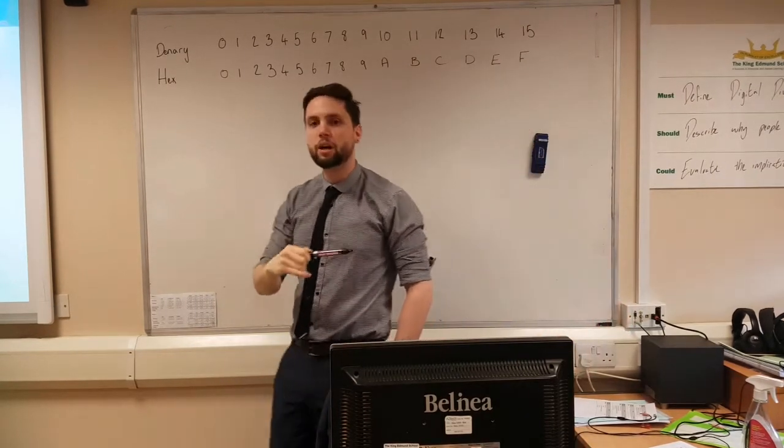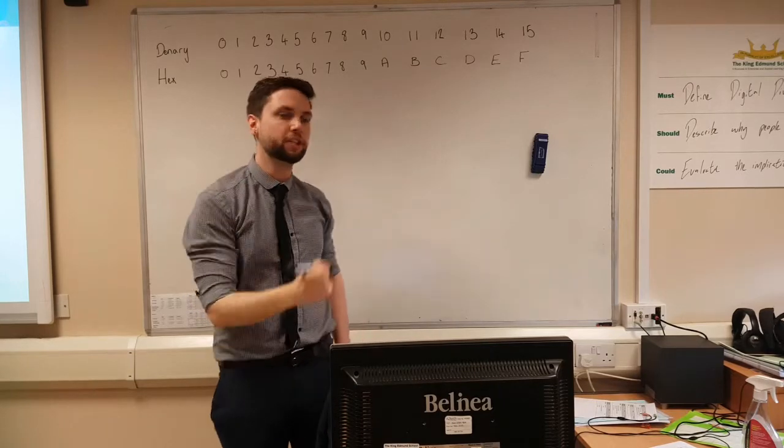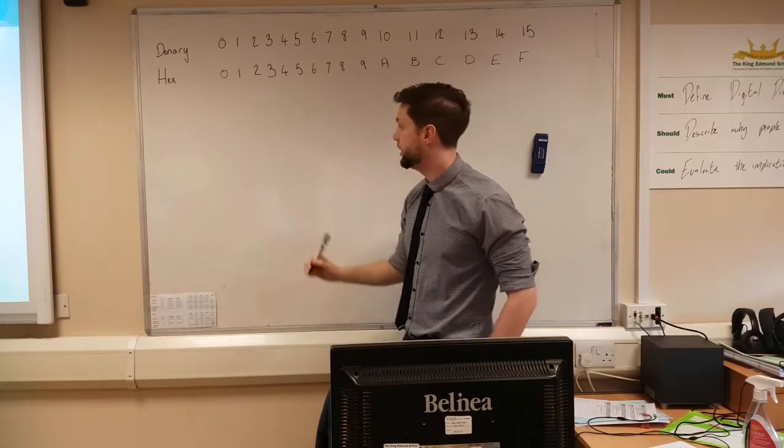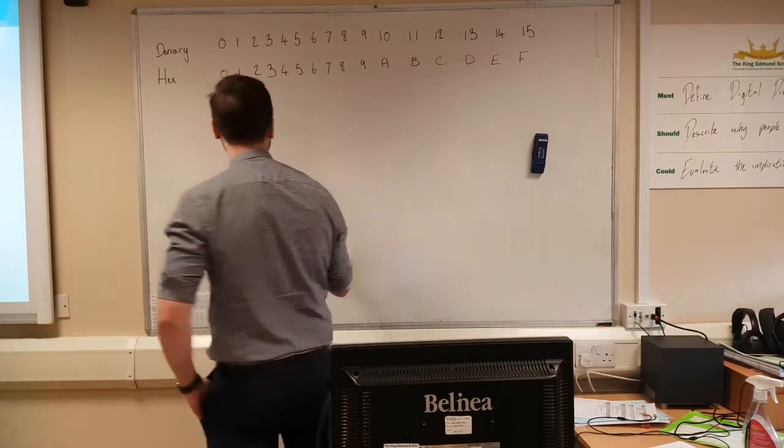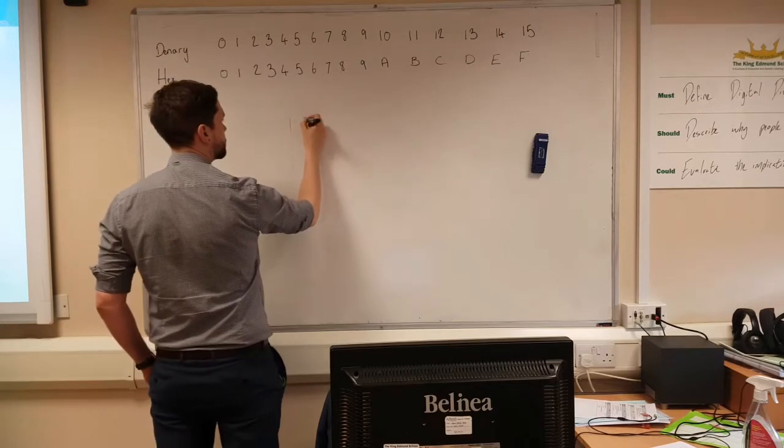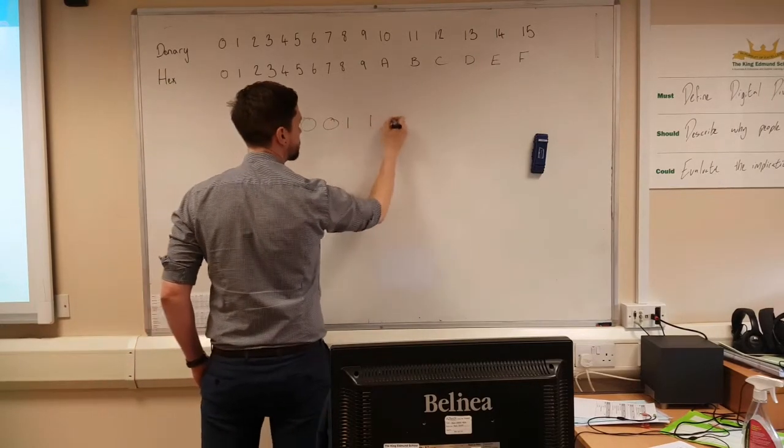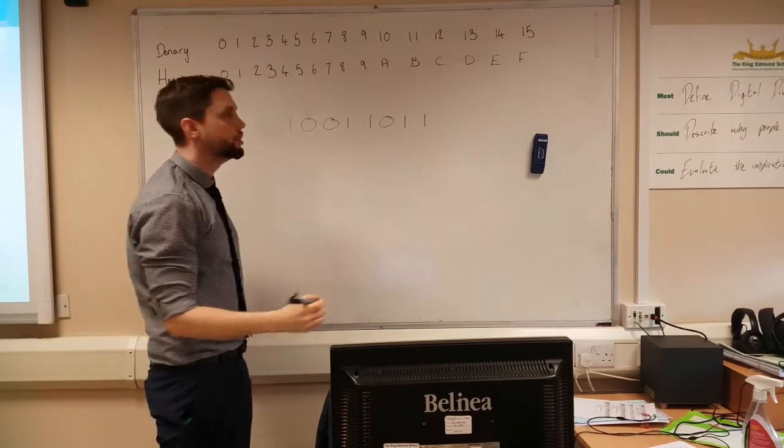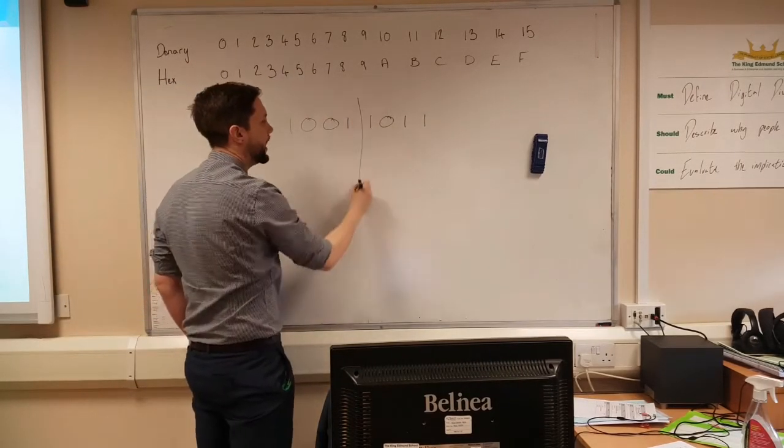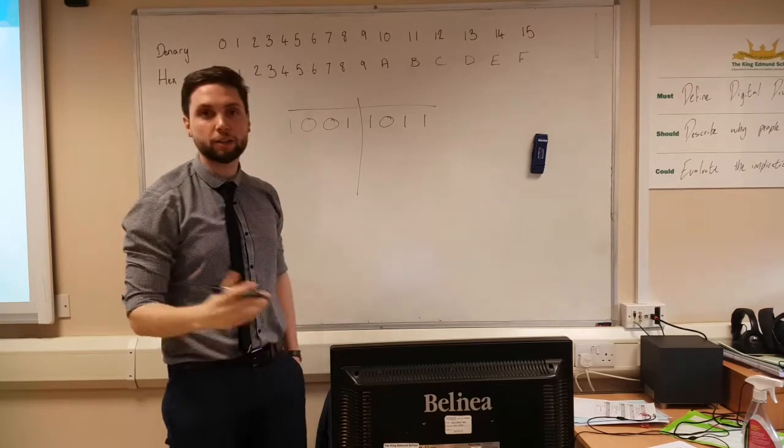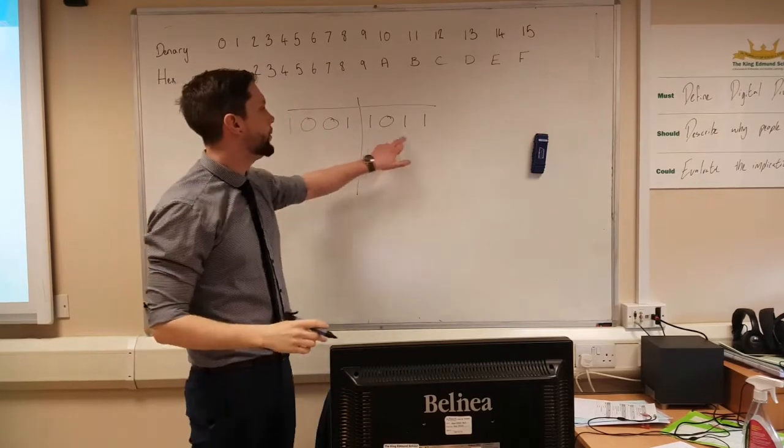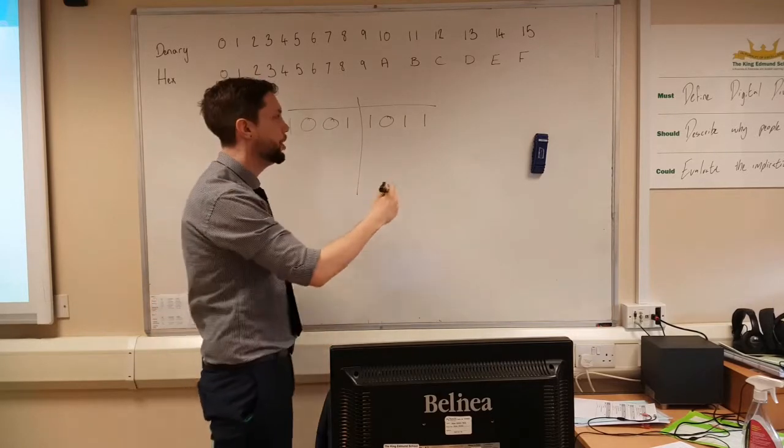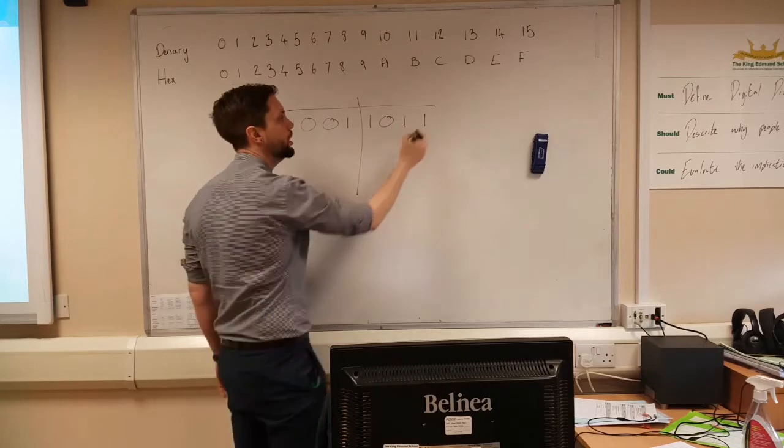So we are going to be looking at how we actually convert binary numbers into hex numbers to start today, and then going back from there. So this is probably the easiest way to do it. So we have a binary number. All we need to do is we split it down into two nibbles. Now we need to number these just like we would do any other binary numbers, but obviously we're only going up to eight for each one because they're two nibbles.